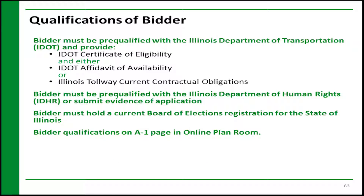Bidders need to be IDOT pre-qualified and provide an IDOT Certificate of Eligibility and either an IDOT Affidavit of Availability or Illinois Tollway current contractual obligations. You will also need to be pre-qualified with the Illinois Department of Human Rights, or submit evidence of your application for pre-qualification. You must hold a current Board of Elections registration with the State of Illinois. Your bid will be considered non-responsive if these requirements are not met. The bidder qualifications can be found on the A-1 page, which can be viewed and downloaded from the Online Plan Room.